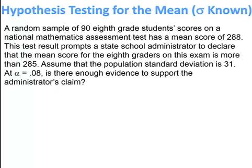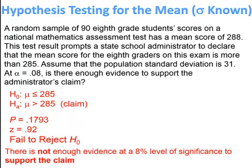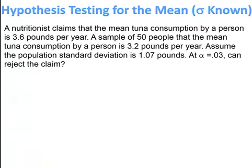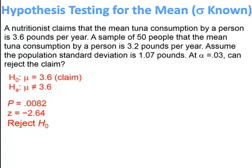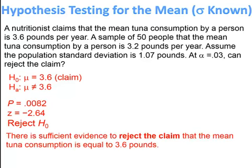Pause and try. The hypothesis statement has the claim on the alternative, with the greater-than option highlighted in the calculator. The p-value is .1793 with a test statistic of 0.92 — fail to reject the null. There is not enough evidence at the 8% level of significance to support the claim. In the next problem, the claim is on the null. The p-value is .0082, test statistic is −2.64, so we reject the null — there is significant evidence to reject the claim that the mean tuna consumption equals 3.6 pounds.